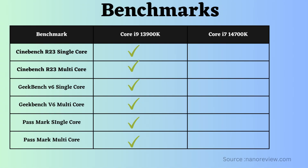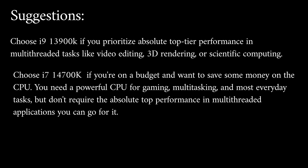In benchmark comparisons, such as Cinebench R23 single and multicore, Geekbench single and multicore, and Passmark single and multicore, the Core i9-13900K outperforms the Core i7-14700K. Choose the i9-13900K if you prioritize absolute top-tier performance in multi-threaded tasks like video editing, 3D rendering, or scientific computing.